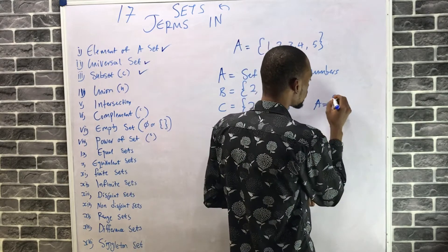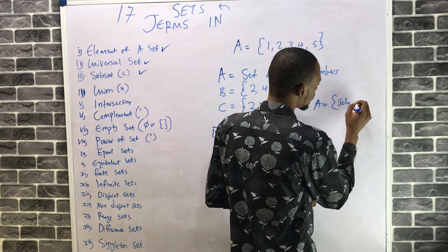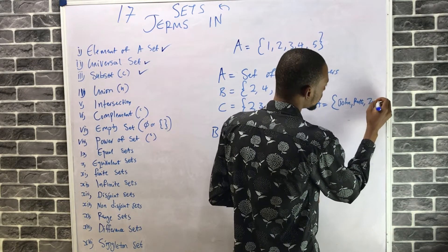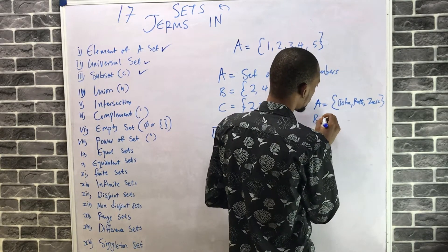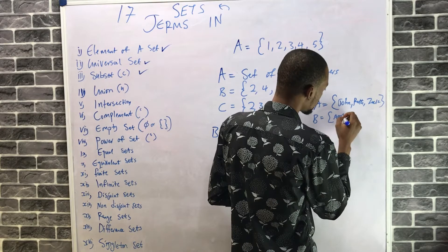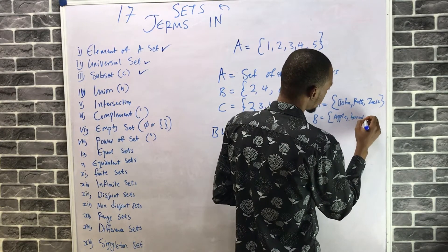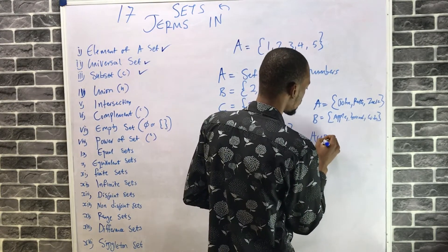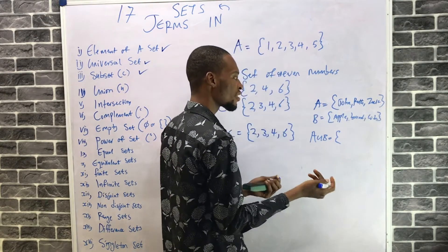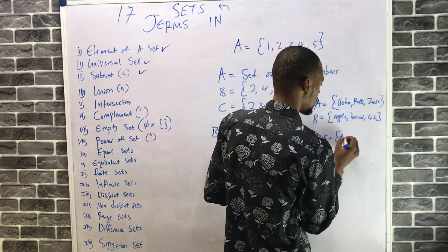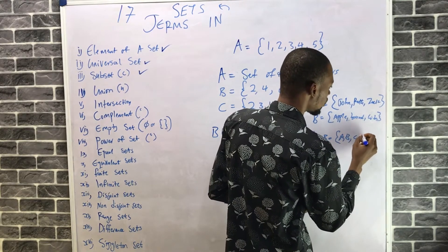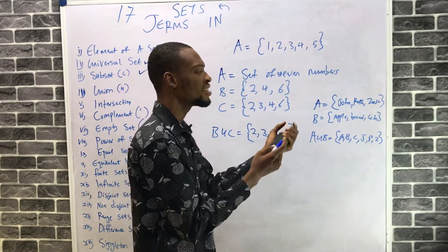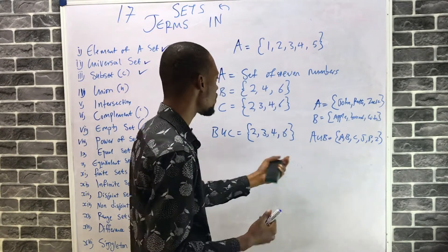Similarly, if set A is {John, Ruth, Zouk} and set B is {Apple, Bread, Cook}, then the union of A and B is {John, Ruth, Zouk, Apple, Bread, Cook} — merging the two sets and rearranging them together. That's the union of a set.